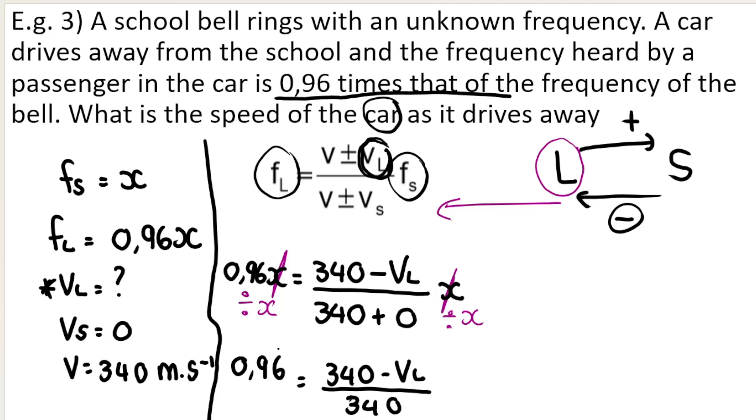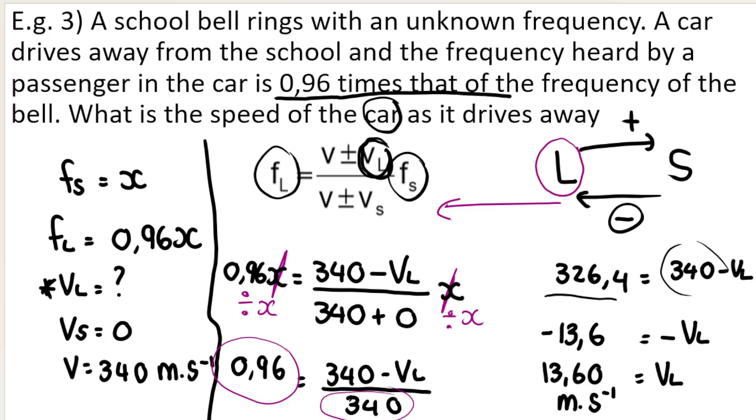So how would you get VL by itself? You say 0.96 multiplied by 340. And I get this number over here. And then I say 326.4 minus 340. And I get negative 13.6 equals negative VL. Therefore, velocity of the listener is 13.60 meters per second away from the bell. Well, they wanted speed, which means I don't need a direction. Just 13.6 meters per second. That's it.